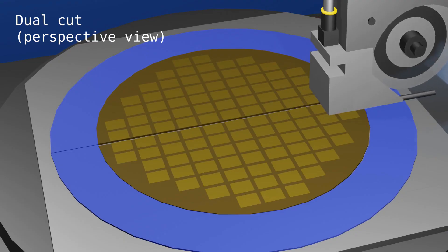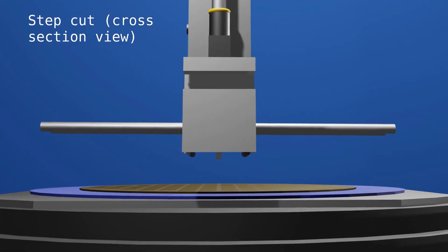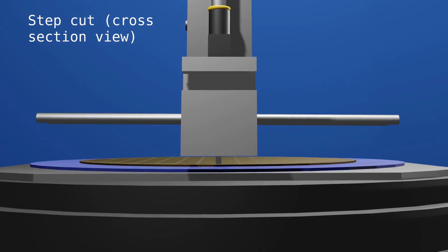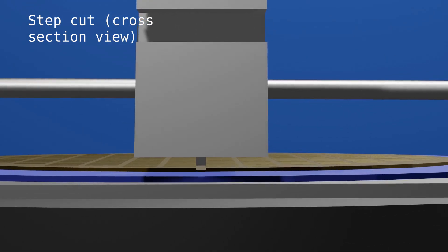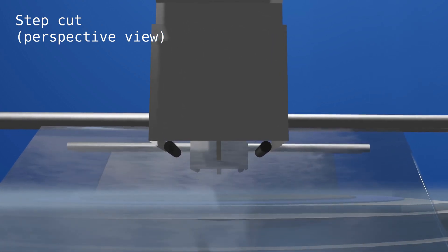The last process is the step cut. The step cut involves two cuts. First, a thicker blade cuts approximately 70% of the silicon thickness and a second, thinner blade follows to cut the last 30% of the silicon thickness.